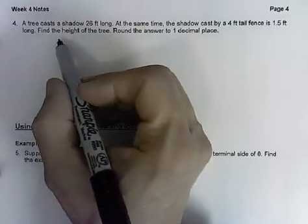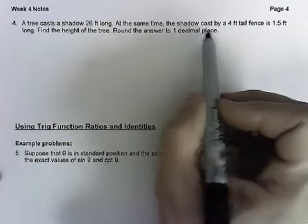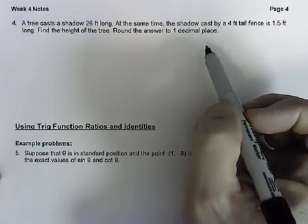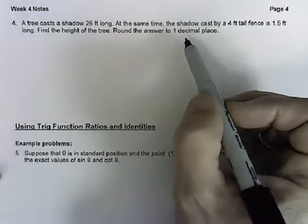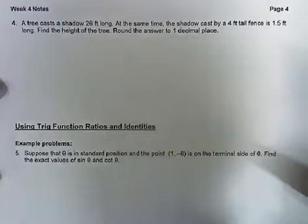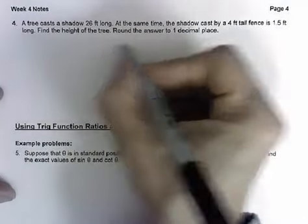Here's another problem that has to do with geometry facts. This one actually uses the idea of similar triangles. But in order to know that, you really need to draw the picture. We have a tree that's casting a shadow 26 feet long.